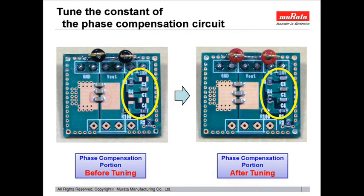Although the same capacitor is used on this board, the phase compensation circuit shown by the yellow line differs. The left side is a phase compensation circuit the same as a common capacitor or a conductive polymer capacitor. The right side is the optimized phase compensation circuit for a monolithic ceramic capacitor. The waveform shown previously is after optimization of the right side.